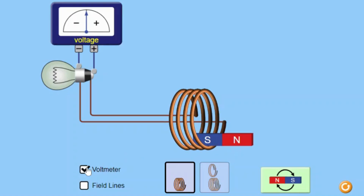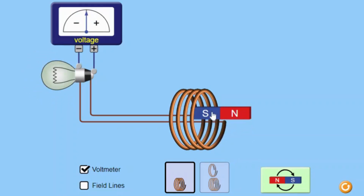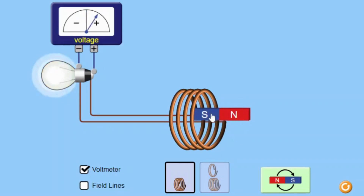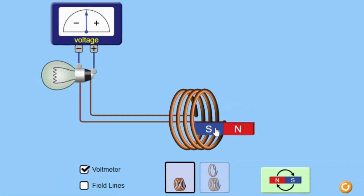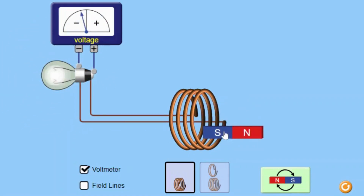The simulation allows students to observe how changes in magnetic flux induce an electric current. Magnetic flux is the product of the magnetic field's strength and the area of the coil perpendicular to the field. Students can adjust the number of turns in the coil, and the number of turns affects the induced EMF, as a higher number of turns increases the induced voltage.